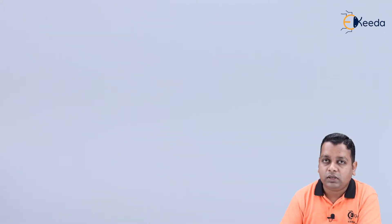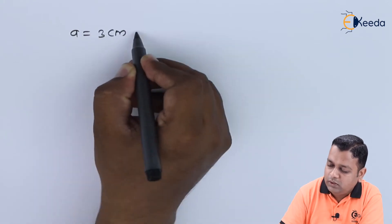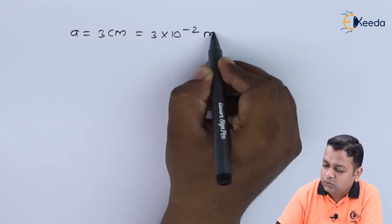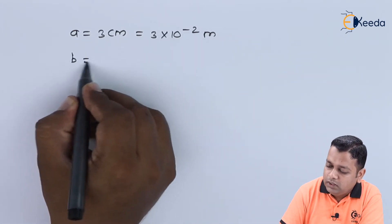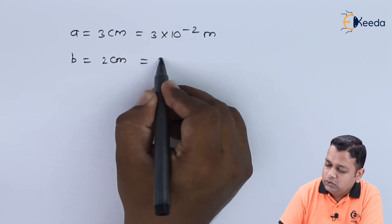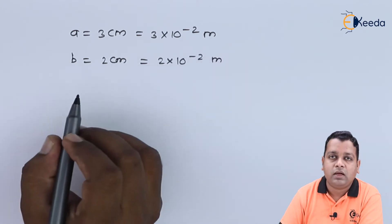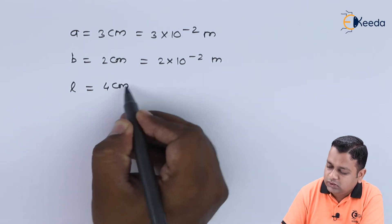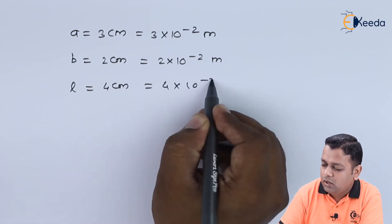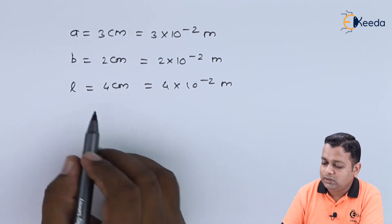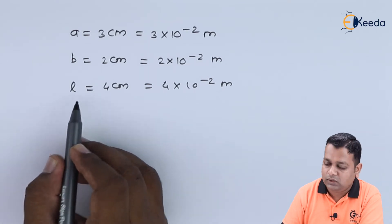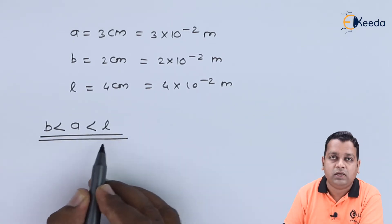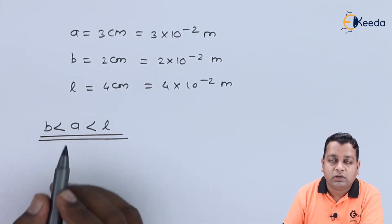Converting to SI units: small a = 3 cm = 3 × 10⁻² m, b = 2 cm = 2 × 10⁻² m, and length l = 4 cm = 4 × 10⁻² m. Noting the relation among dimensions: b is less than a, which is less than l.